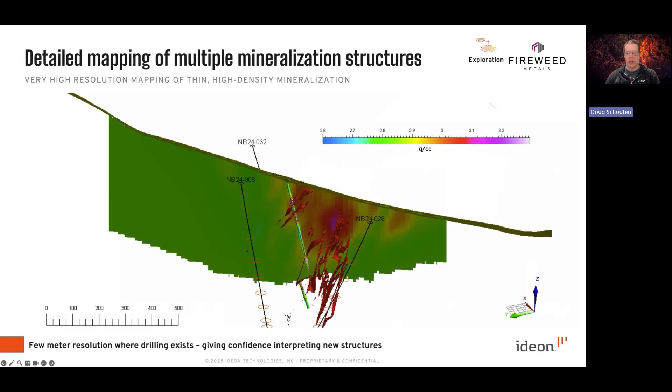So this shows progressive sections of the unconstrained muon tomography density model as we slice from east to west. Fireweed's density model derived from their drilling in the area is also shown. The red surface contours surround the greater than 3 grams per cc cutoff from the Fireweed Metals density model.